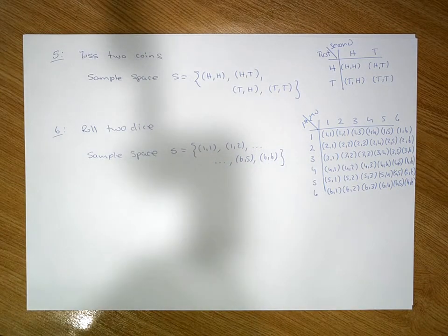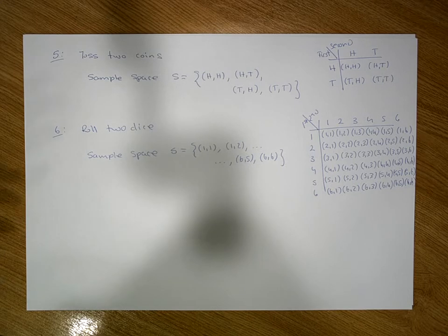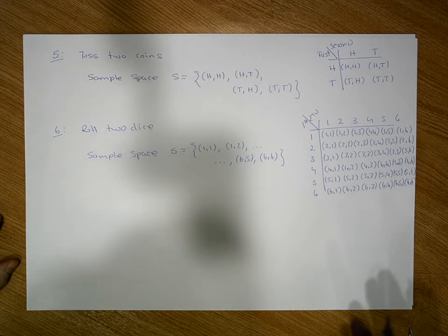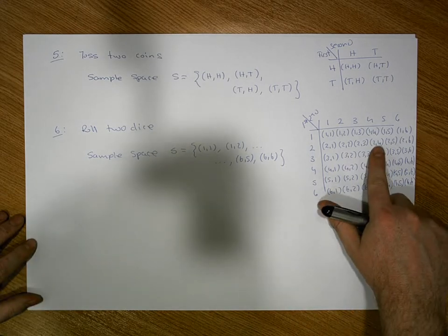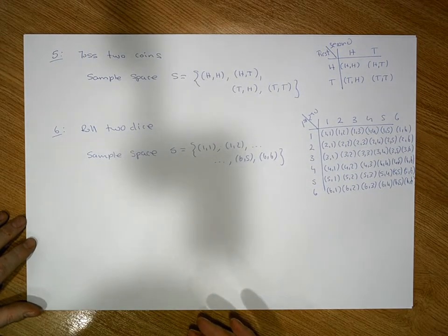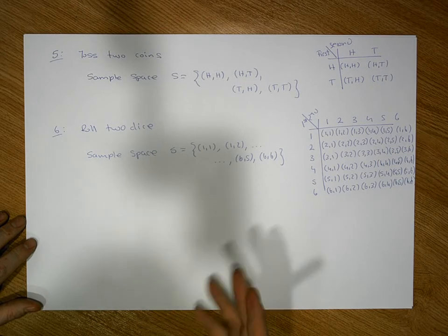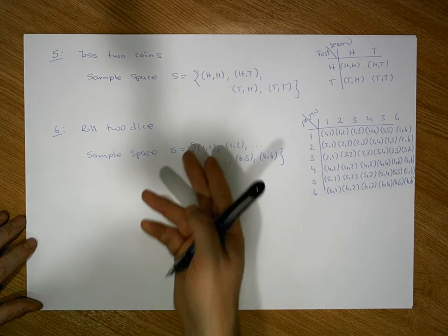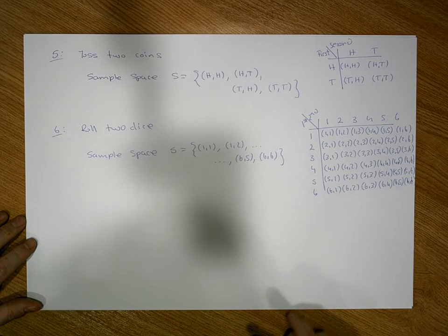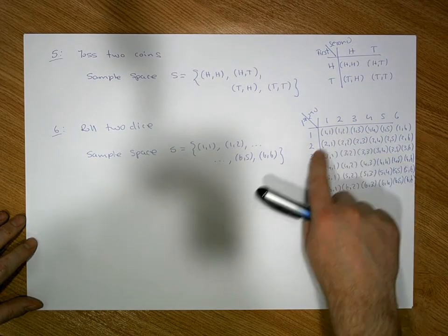In this particular instance, you might be interested in what's the probability that the first die has a value of 2 and the second die has a value of 4, in which case you're interested in this particular event here. You might also be interested in the event where the sum of both dice adds to 3, in which case 2-1 is 3 and 1-2 is 3. So those are the possible outcomes you could be interested in.